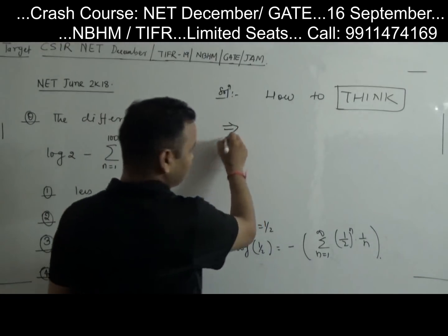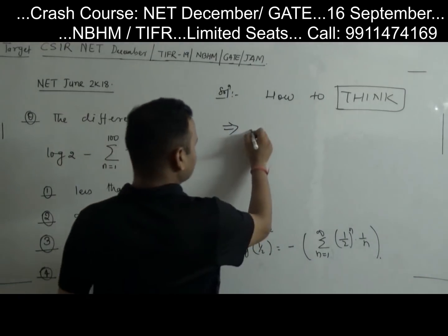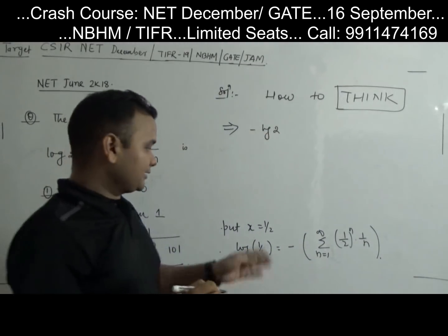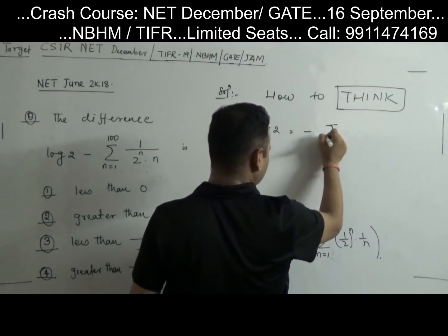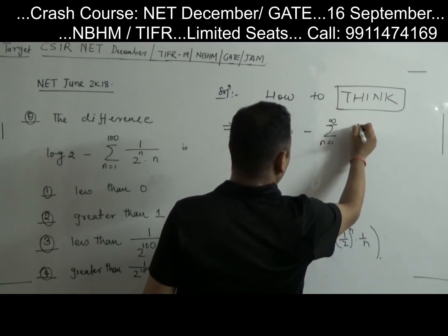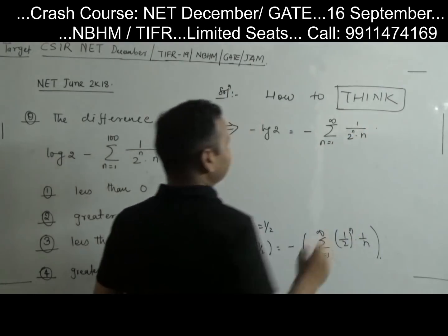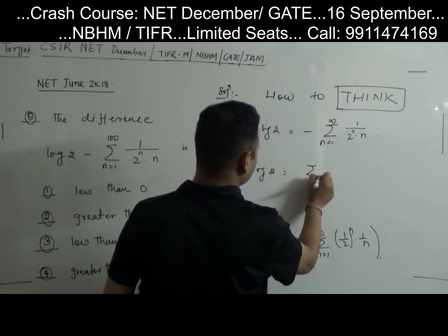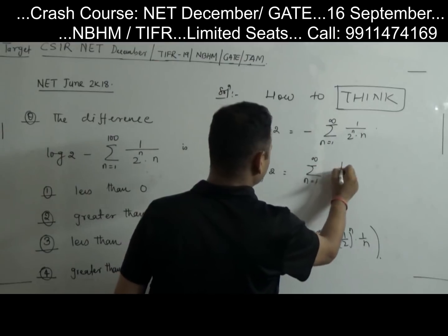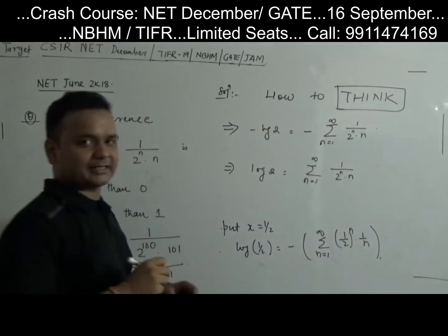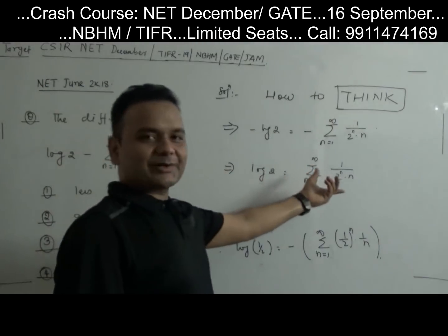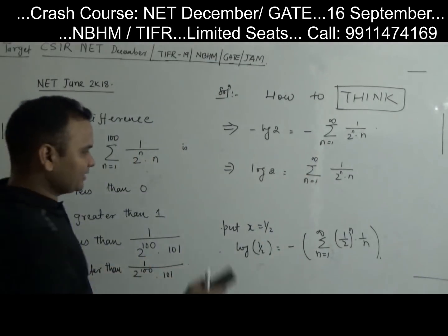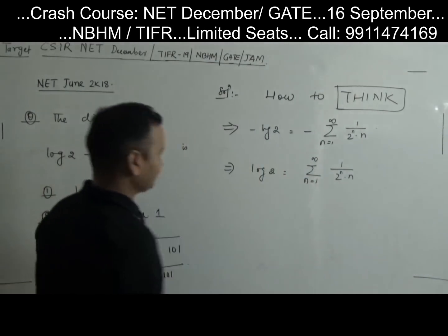So log 2 equals the sum from n=1 to infinity of 1/(2^n · n). Now we need this: log 2 minus the partial sum from n=1 to 100 of 1/(2^n · n). The value of this difference is what the question is asking.